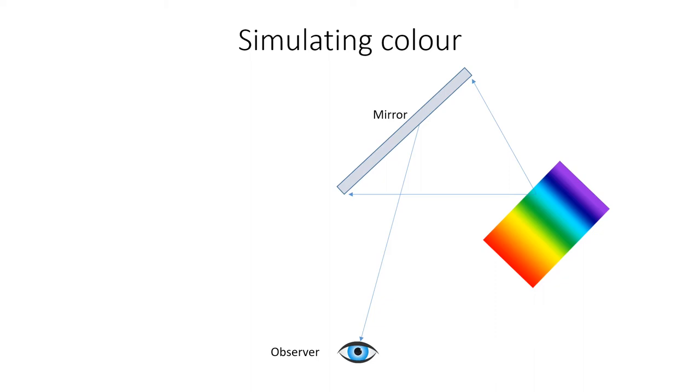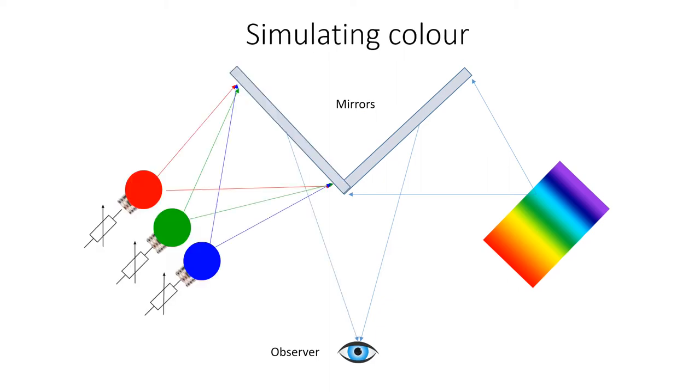This shows an experiment to illustrate this. A mirror is positioned so that the eye sees a spectrum of light and the eye focuses on a specific color. Another mirror is positioned at 90 degrees to the first, and then three lamps for each of the primary colors are positioned to reflect off the mirrors into the eye. The brightness of each lamp can be adjusted and the resulting color reflected to the eye can be made to be the same color as the light reflected from the first mirror.